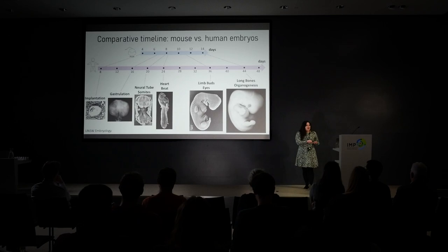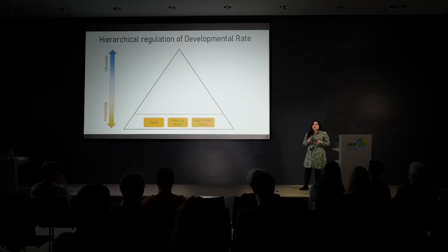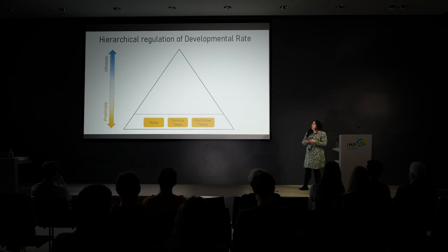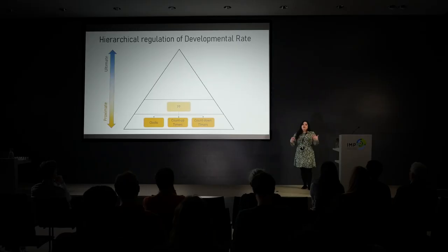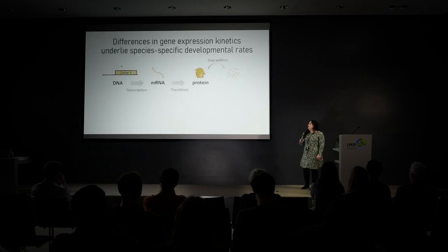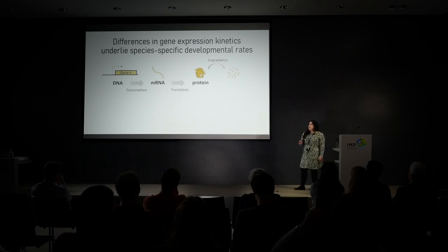The question is: how is this regulated? How is it possible to fine-tune just the timing without changing the relative sequence of events? At the bottom of a hierarchical regulation pyramid there exist individual clock and timer mechanisms that time specific developmental events. We need to think about what works upstream of these clocks and timers to scale all of them simultaneously — to accelerate or slow down by shrinking or expanding the timeline. What is thought responsible for scaling these clocks and timers are differences in the kinetics of gene expression and also protein degradation.